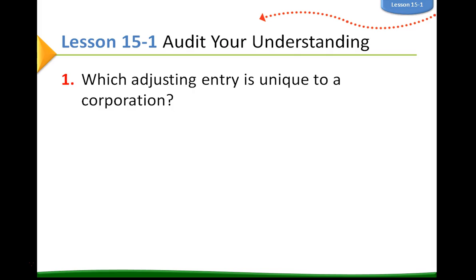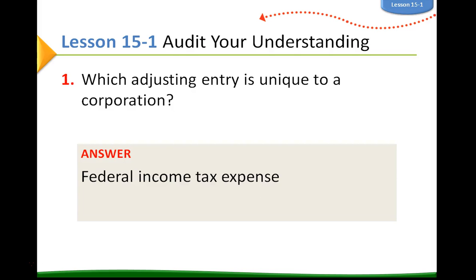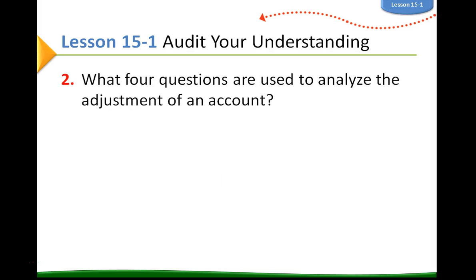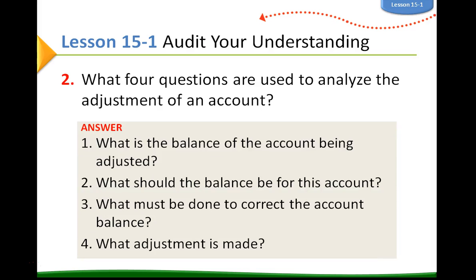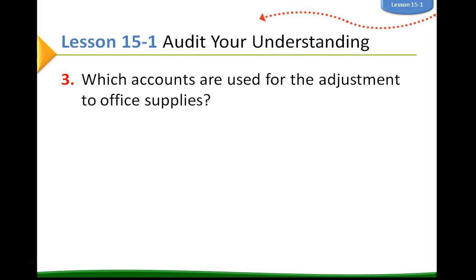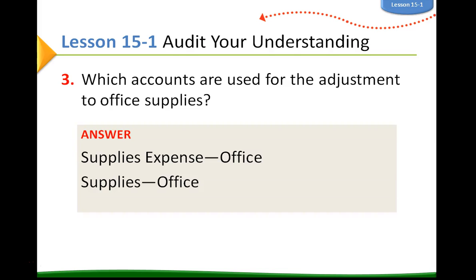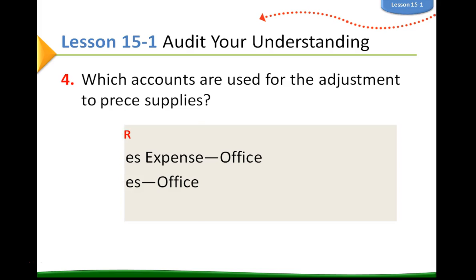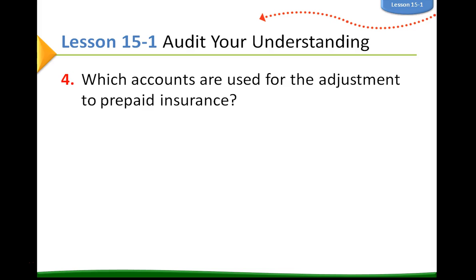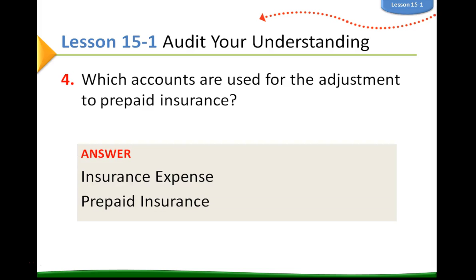The adjusting entry unique to a corporation is the federal income tax expense, since Delgado Services did not have it as a proprietary company. The four questions used to analyze any adjustment are: what is the balance of the account being adjusted? What should the balance be? What must be done to correct it? And what adjustment is made? For office supplies, the accounts used are supplies expense office and supplies office. For prepaid insurance, the accounts are insurance expense and prepaid insurance.